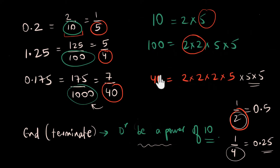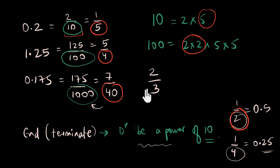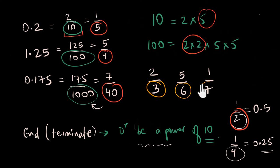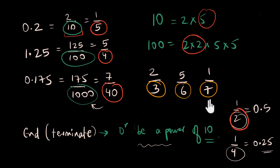This also explains why the other fractions don't work. For denominators 3, 6, and 7, we have numbers that will never give us a power of 10. There is no integer you can multiply 3 by to get 10 or any power of 10 — and the same problem applies to 6 and 7.